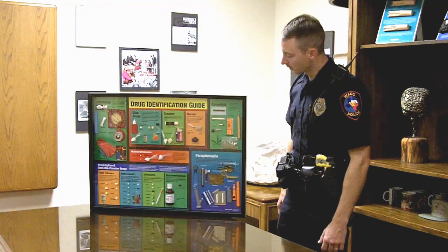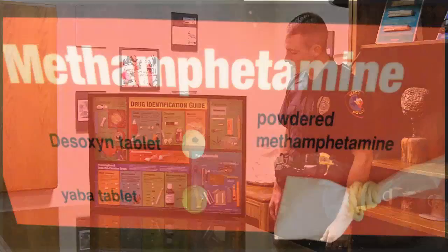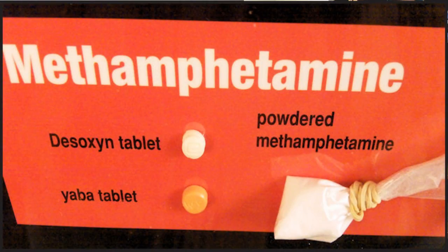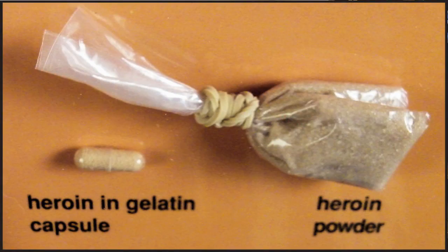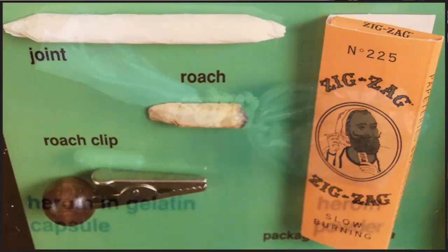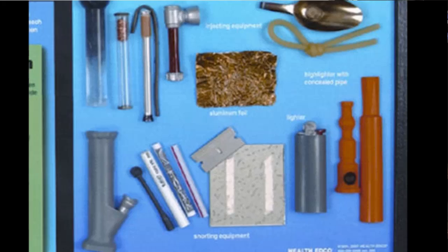You can look in the middle of it and see the illicit drugs — being cocaine, methamphetamine, and heroin. The drugs are depicted accurately on the Drug Identification Guide in coloration, texture, and packaging.